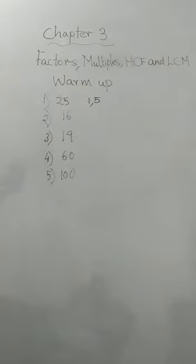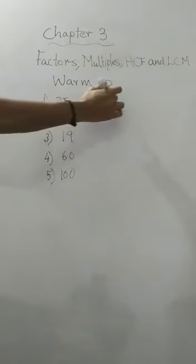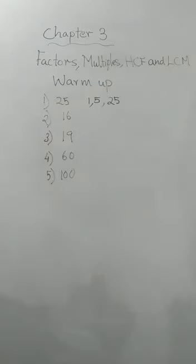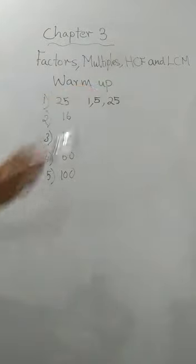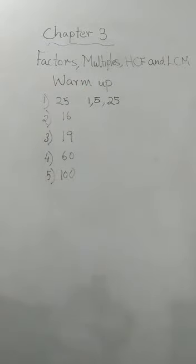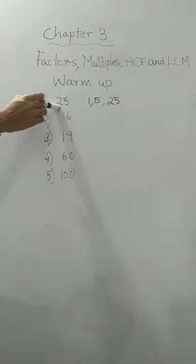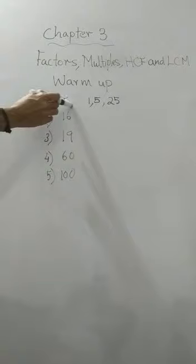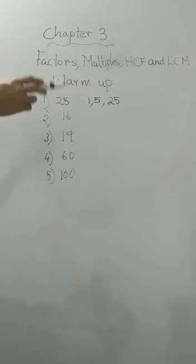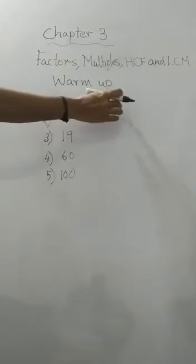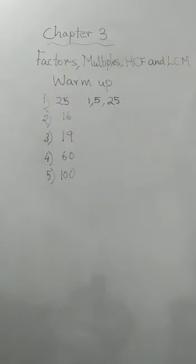The last factor you will get will be 25 itself. You can divide 25 by 25, right? So for any number, 1 will be a factor of that number and the number itself will be a factor. So 1, 5 and 25 are the factors of 25.